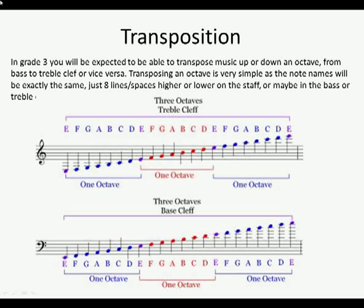Okay, transposition. In grade three, you'll be expected to be able to transpose music up or down an octave. And also maybe up or down from bass clef to treble clef. Transposing an octave is really simple. Okay, what transposing means is you are changing the pitch of either a passage or a note. Okay, so you're just changing the pitch. But essentially, the passage should still sound the same, just at a different pitch. Okay, so transposing an octave is very simple. As the note names will be exactly the same. And they're just going to be eight lines or spaces higher or lower on the staff. Or maybe in the bass or treble clef.